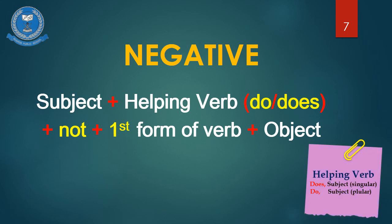Negative: Subject plus helping verb. Here we have two helping verbs — do or does. If your subject is singular, you will use 'does' as your helping verb. But if your subject is plural, you will use 'do' as your helping verb. To make the sentence negative, we add 'not', then the first form of verb along with the object.